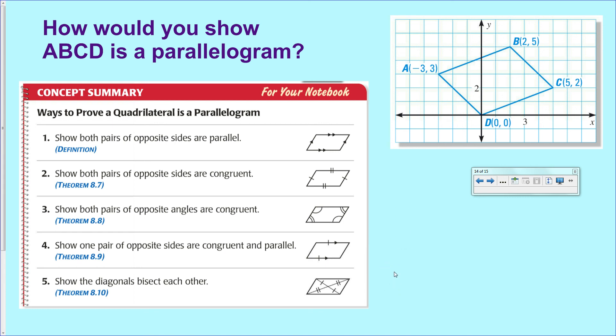Number four, show that one pair of opposing sides are equal in length and parallel. That's probably the easiest one, because all you have to do is show that these two distances are equal and that these two segments are parallel. So you'd have to do a combination of distance formula and slope formula to do that.